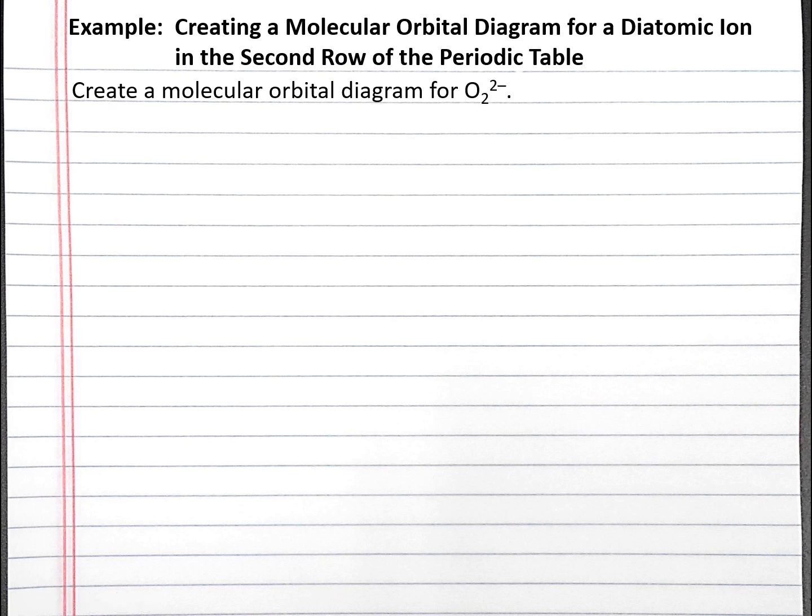In this video, we'll create a molecular orbital diagram for a diatomic ion composed of atoms from the second row of the periodic table. Our problem reads: create a molecular orbital diagram for peroxide, which is O2 2-.